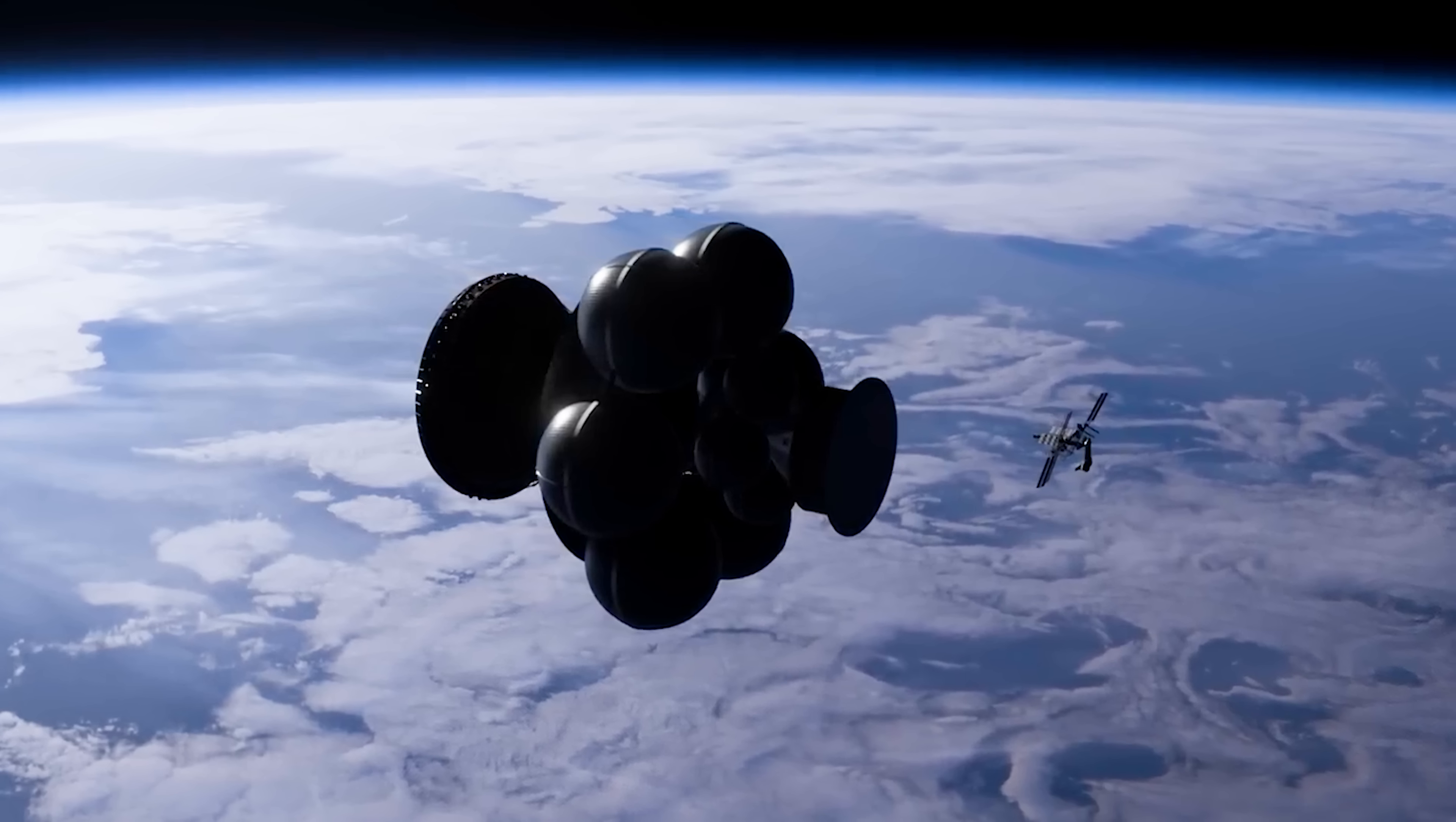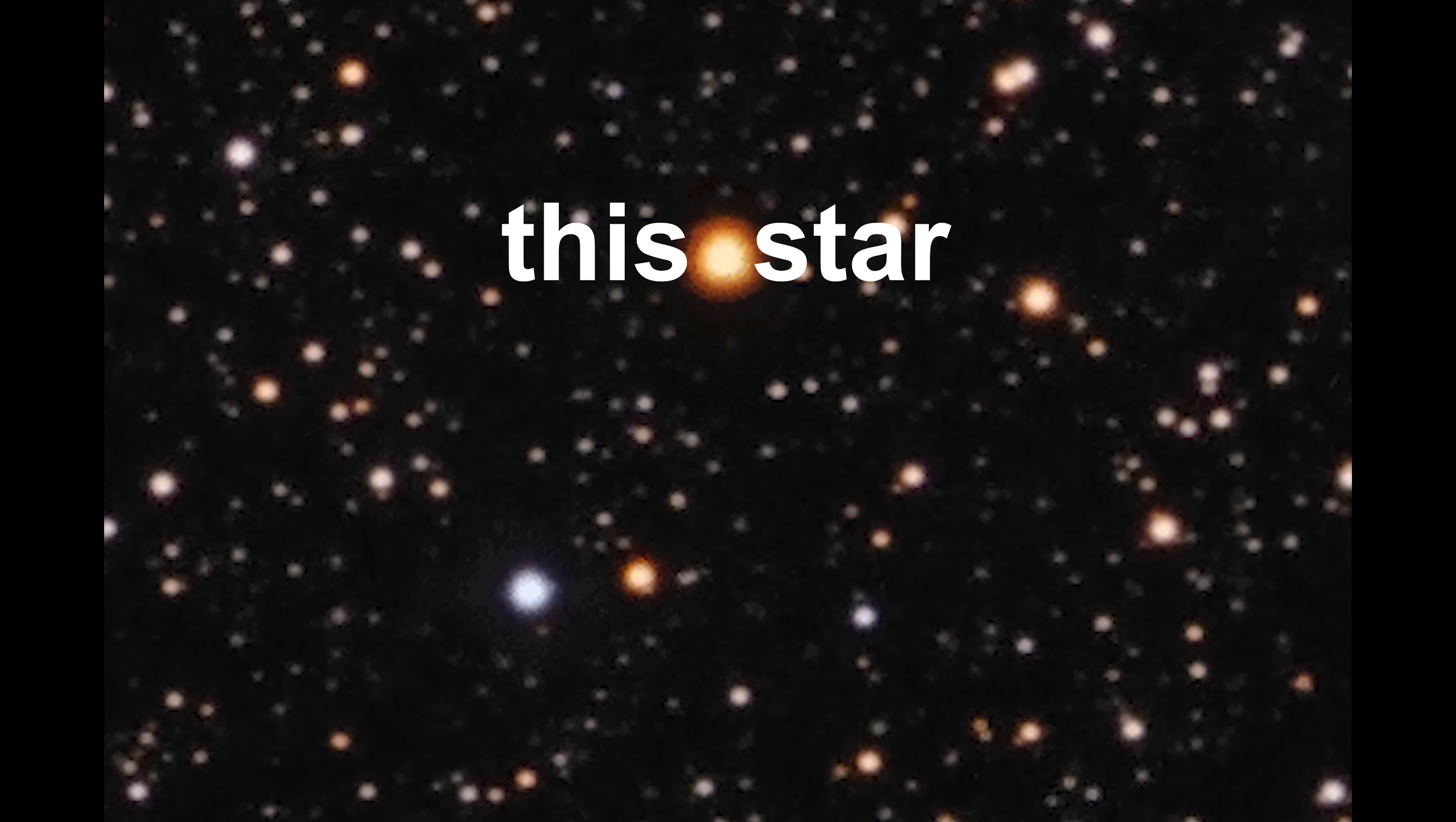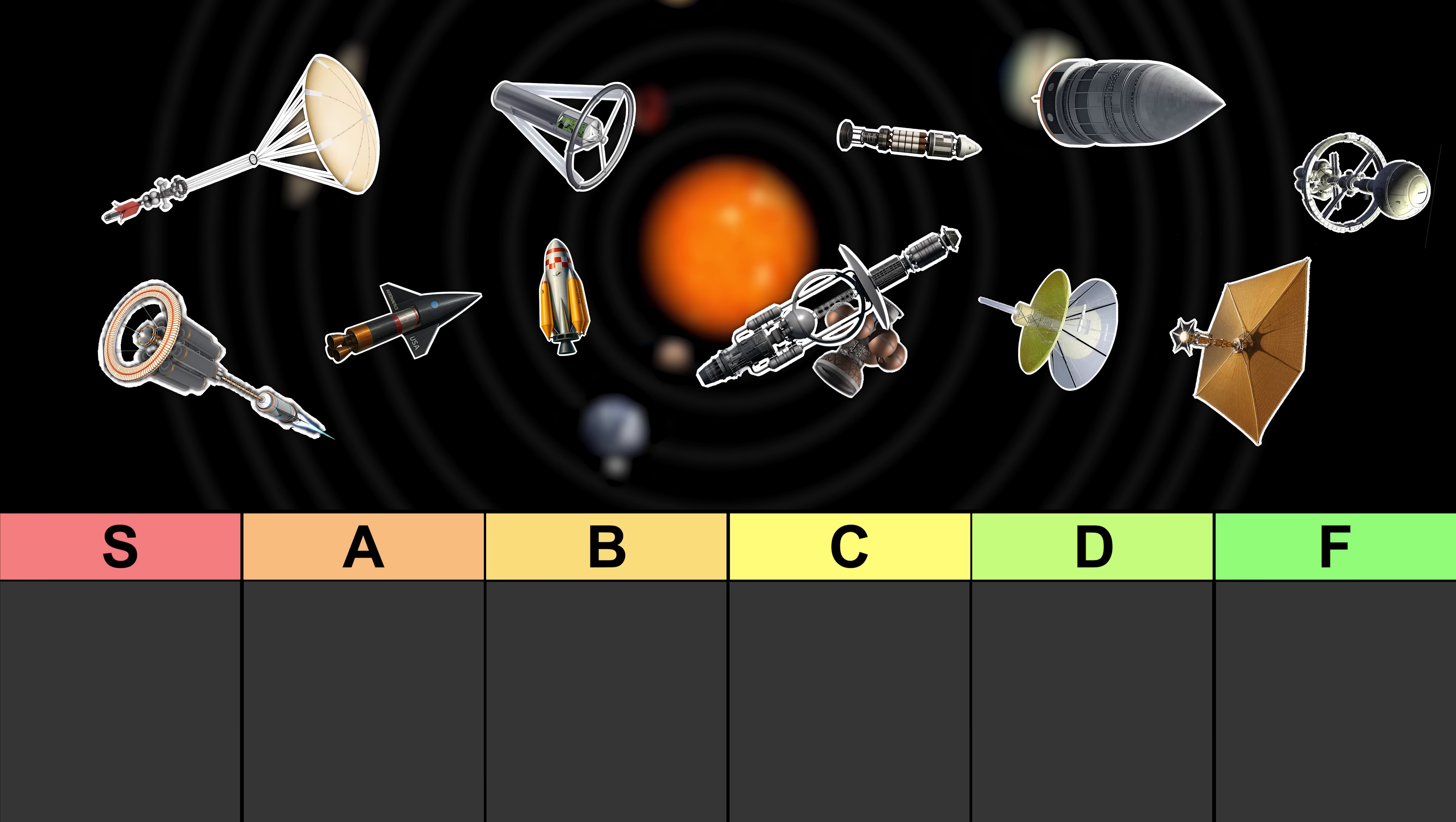Project Daedalus was a British proposal for a fusion powered starship that would fly at 12% the speed of light and reach another star in just 50 years. With six massive hydrogen fuel tanks attached, this thing was wider than an Olympic swimming pool and taller than two statues of Liberty. D tier.